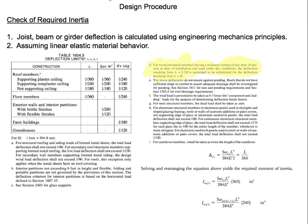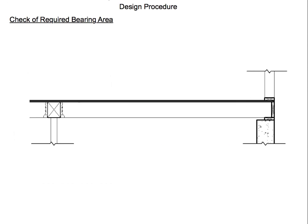After finding the required inertia, we now find the required bearing area. Here we have a floor system with a girder, hangers, joists, and a pressure treated plate. We want to find the required bearing area.